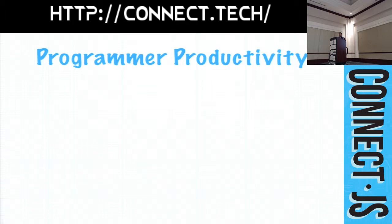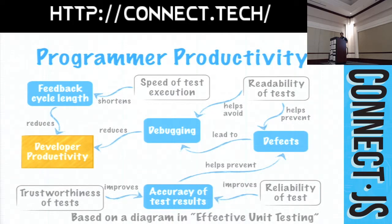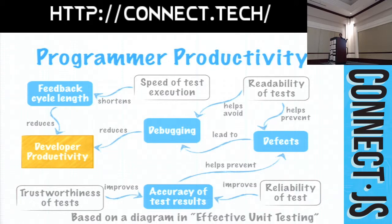This is all about programmer productivity. We're looking at ways to make you more efficient, get the code done quicker, and get higher quality code. The trustworthiness and readability of your tests improve the accuracy of the results, which helps prevent defects. Defects lead to debugging, and the more time you spend debugging the less productive you are. The speed of test execution also matters — if you have to hit a database or a service, your tests run slower, which means it takes longer to get feedback, and your productivity goes down.